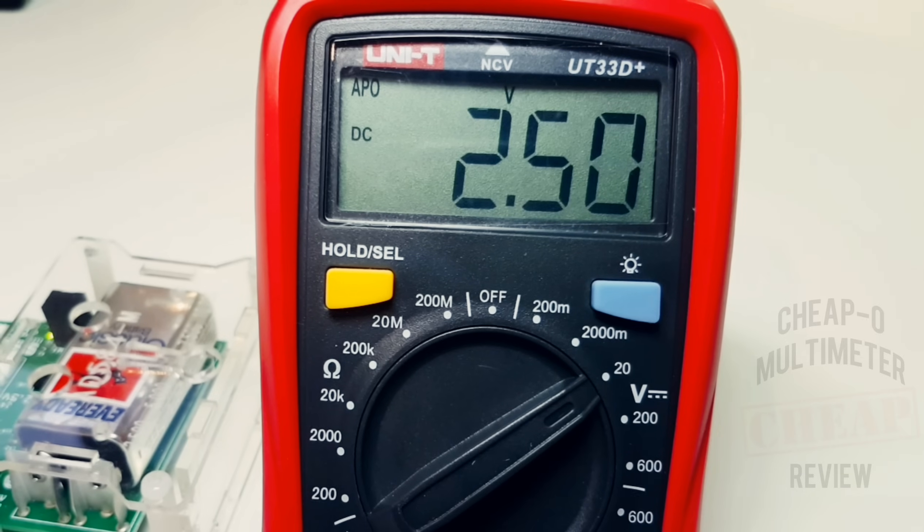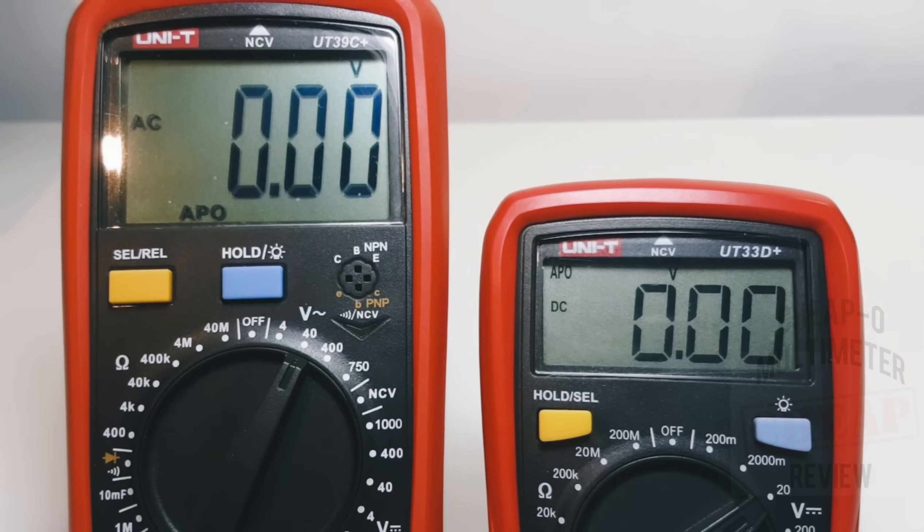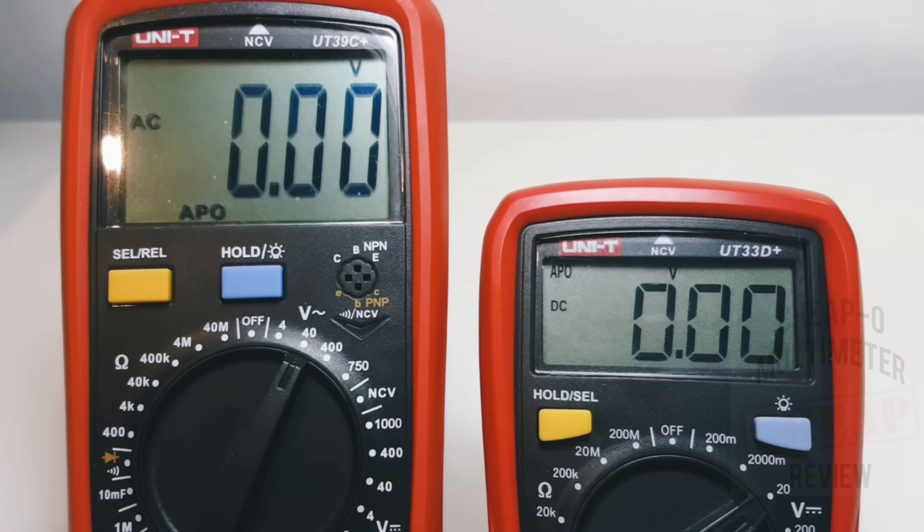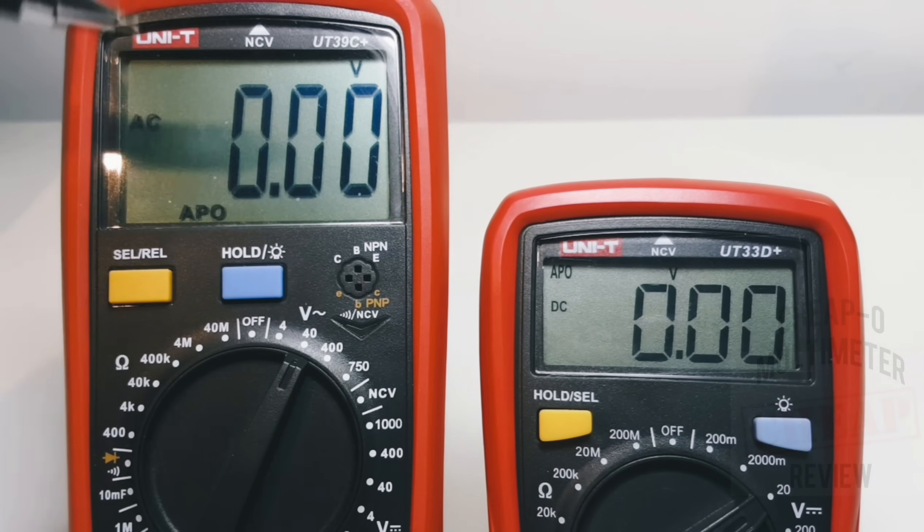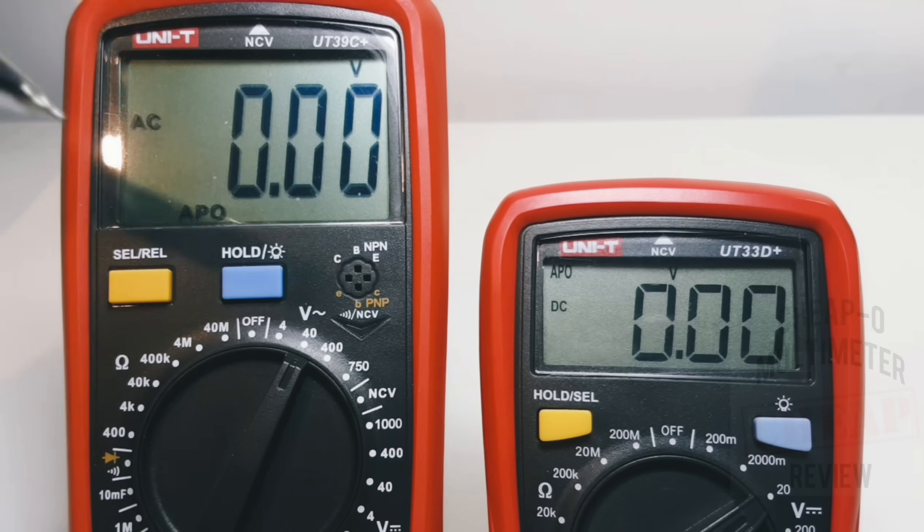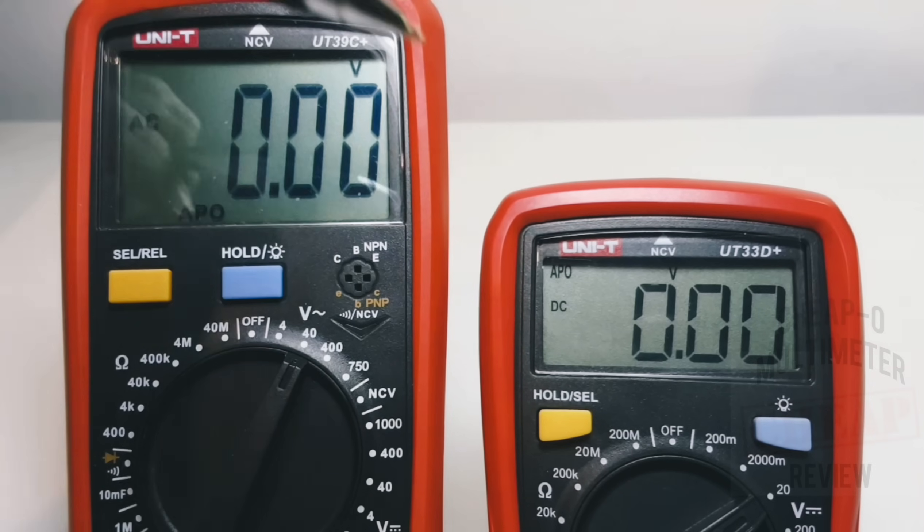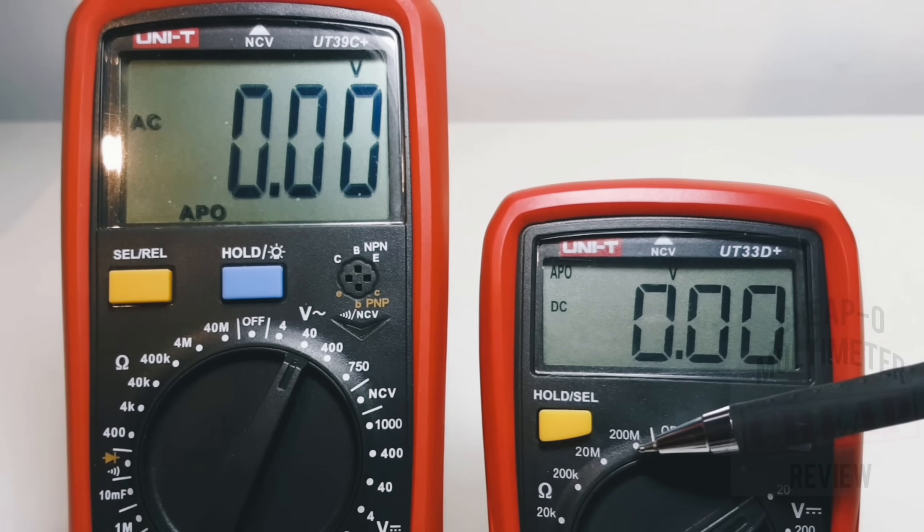Taking a look at the UT39C+ beside the 33D+, we can see there is a definite difference. Both are in the cheapo multimeter realm. Now definitely the 39C+ is a great little non-auto ranging meter. I really like it. Fantastic continuity, does temperature, does a whole lot for not a whole lot of money. 4,000 counts, great little meter. Up against the 33D+, you can tell half the size. The 33D+ is, you also have the backlight.